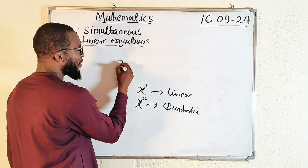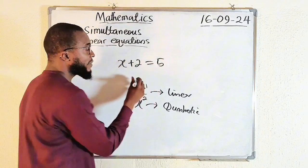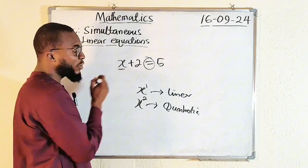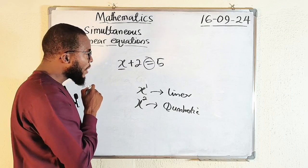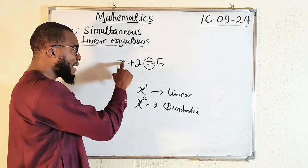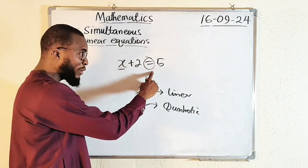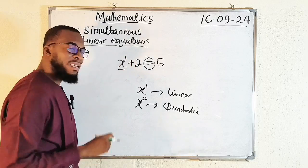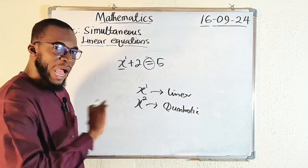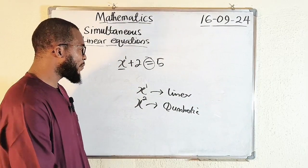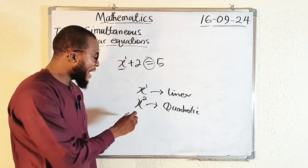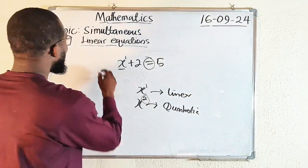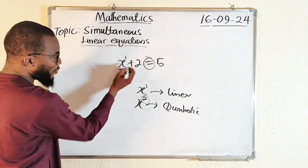When you have x to the power of two, this is what we call quadratic. If it is to the power of three, we call it cubic. If it is to the power of four, we call it quartic, and so on. So a linear equation is an equation of degree one. For example, x plus two equal to five — this is an equation because of the equality sign. We have an unknown variable which we are looking for, a number that can be added to two to make five.